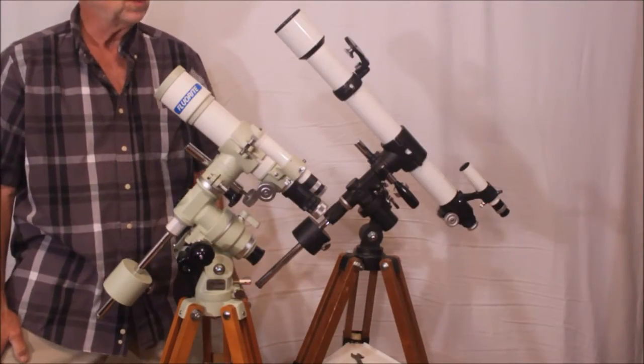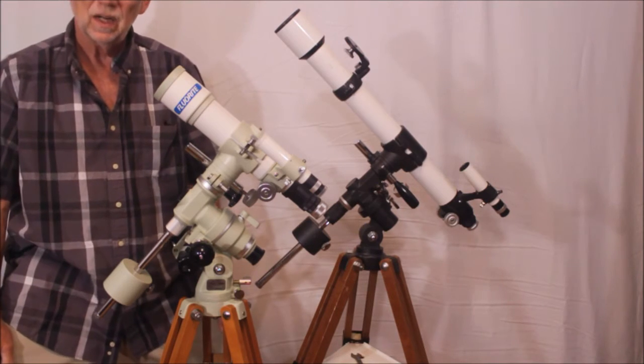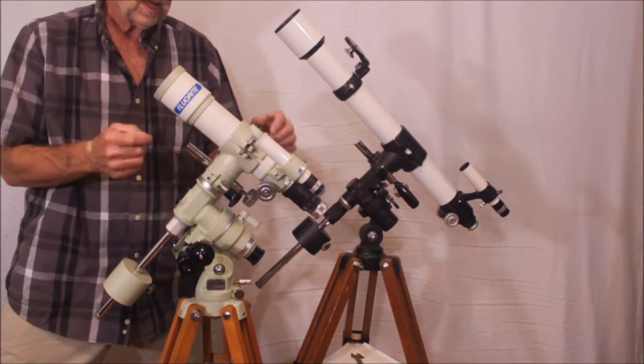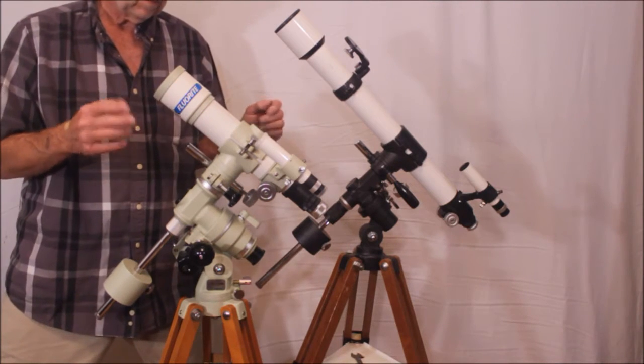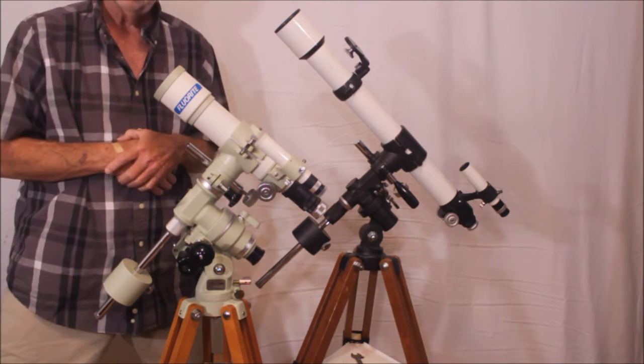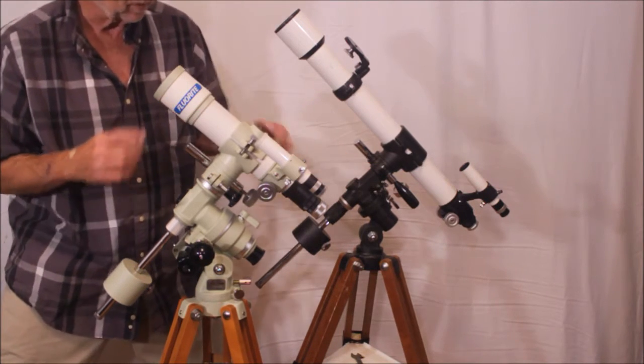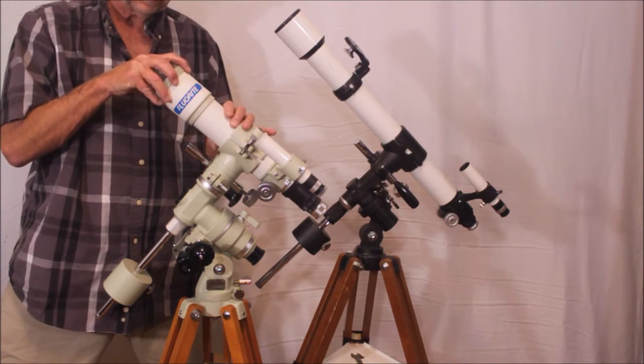This is something you won't see too often. A pair of Takahashi 50 millimeter telescopes from different generations. This is the FC-50, probably from around 2000 or so, just to guess. Anyway, it's a much newer scope than this from 1971, but still not brand new.